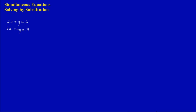Welcome to our lesson on simultaneous equations. We're going to be looking at solving simultaneous equations by substitution. In these two equations, we have 2x plus y is equal to 6, and 3x plus 4y is equal to 19. We have two variables, x and y, hence we must have two equations to solve for our two variables, and we are going to solve them simultaneously.